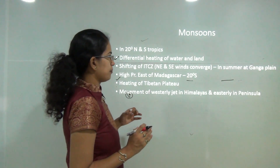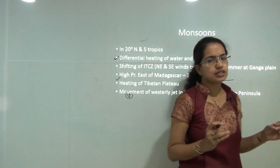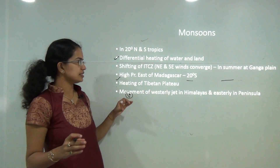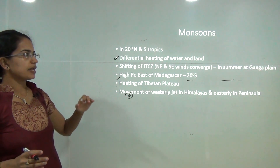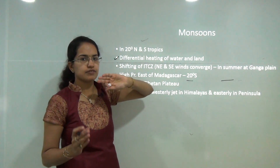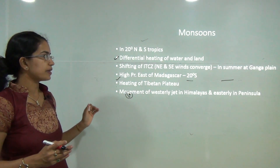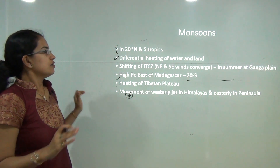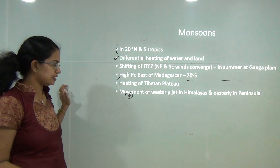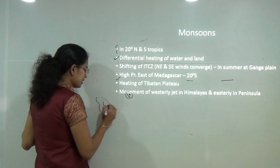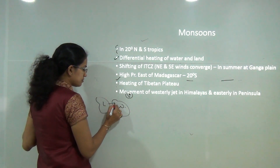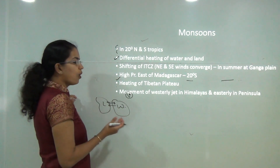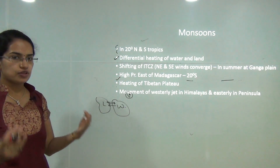Monsoon is a phenomenon that usually occurs 20 degrees north and south, mainly affecting the tropical region. Monsoon is predominantly a tropical phenomenon driven by differential heating of land and sea. If both land and water are at the same temperature, there would be no differential heating and no obvious wind movement to affect rainfall. However, a temperature difference creates pressure differences, leading to wind movement.